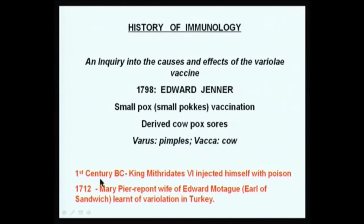Another curious fact is that this injection of increasing doses of poison is actually followed when you make anti-sera against snake venom. How is anti-sera against snake venom made? They take very small concentrations of snake venom that will not kill horses, inject them to begin with, and then follow it up with slowly increasing doses of snake venom, and get this anti-sera which will neutralize the snake venom — to be given to people who have a snake bite and have had a chance to come to the hospital to receive it.